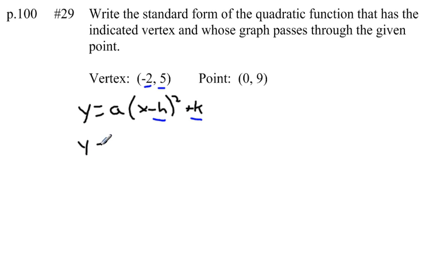So I'm going to write y equals a times x minus negative 2, which I can write as x plus 2, quantity squared, plus k, which is equal to 5.